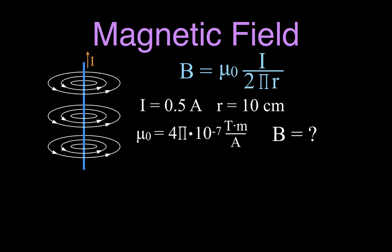The first example: we have a current carrying wire with a current of 0.5 amperes. We're 10 centimeters from the wire. We want to know what is the magnetic field that's 10 centimeters away from the wire when we have a current of 0.5 amperes.